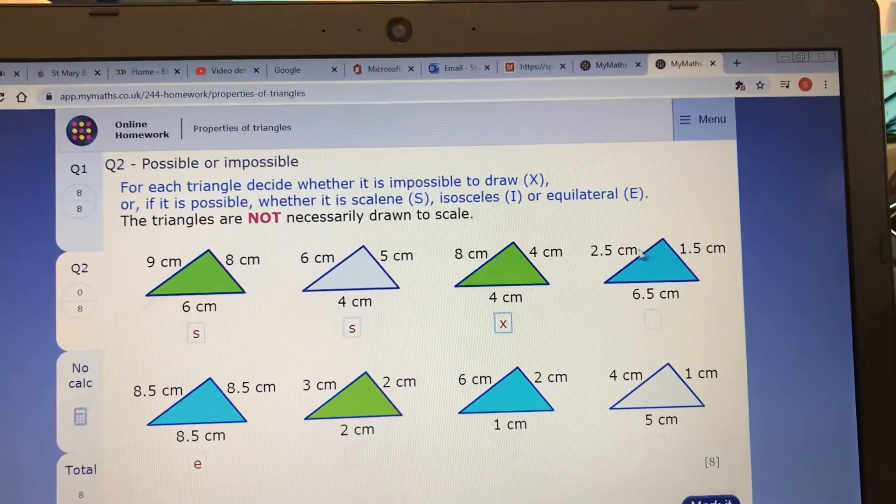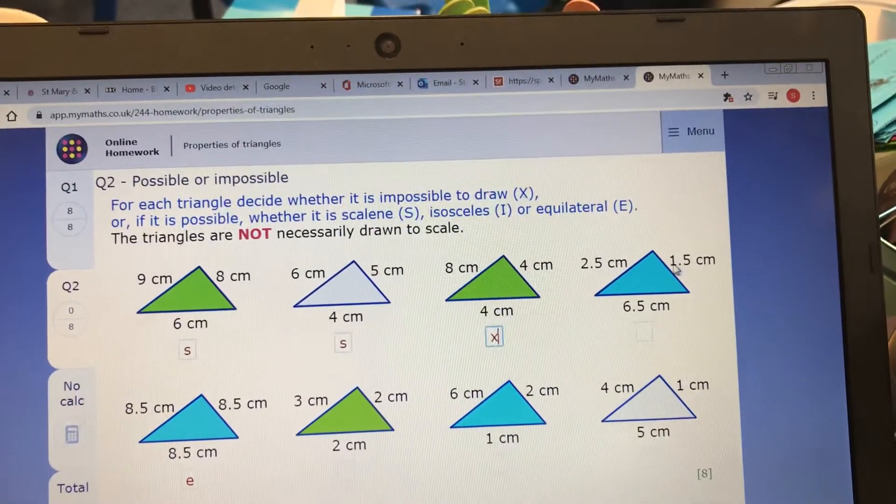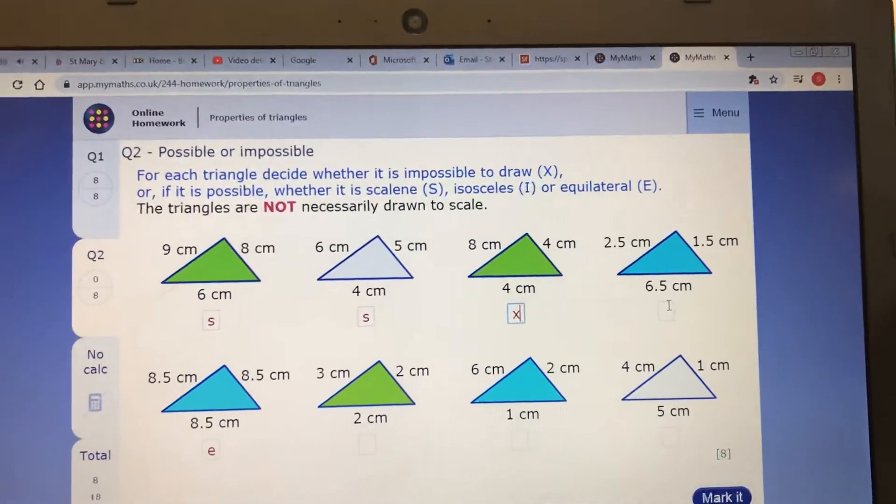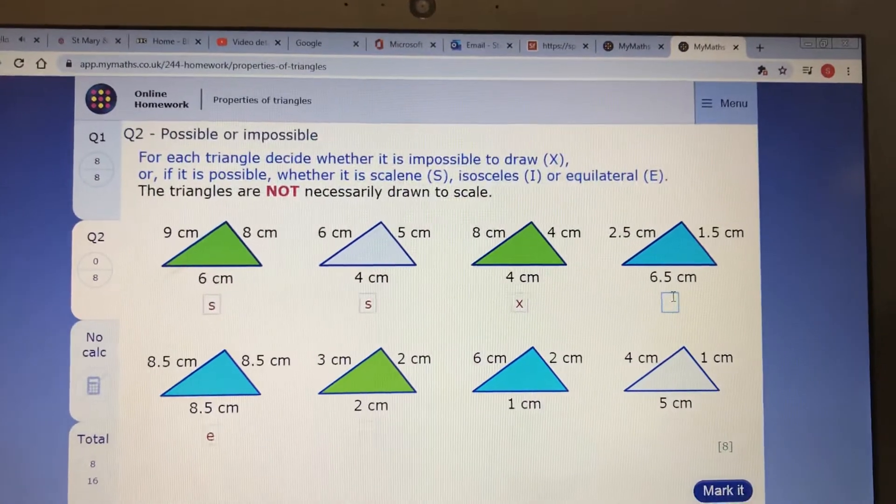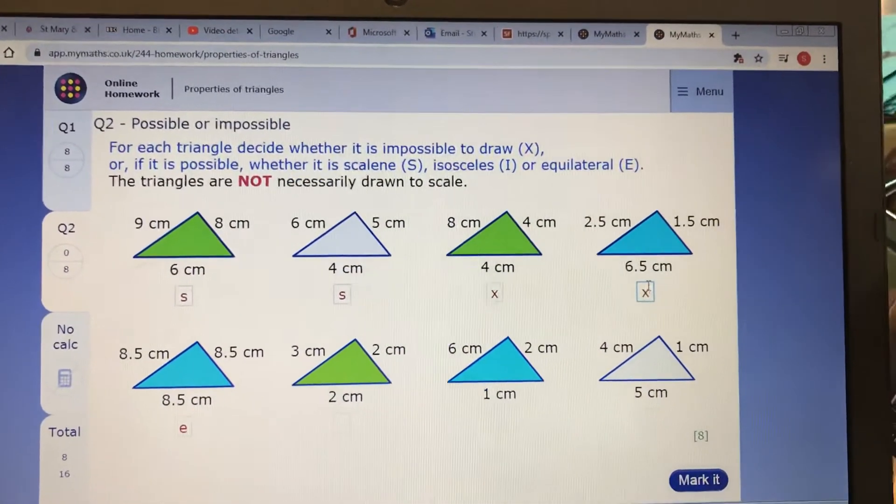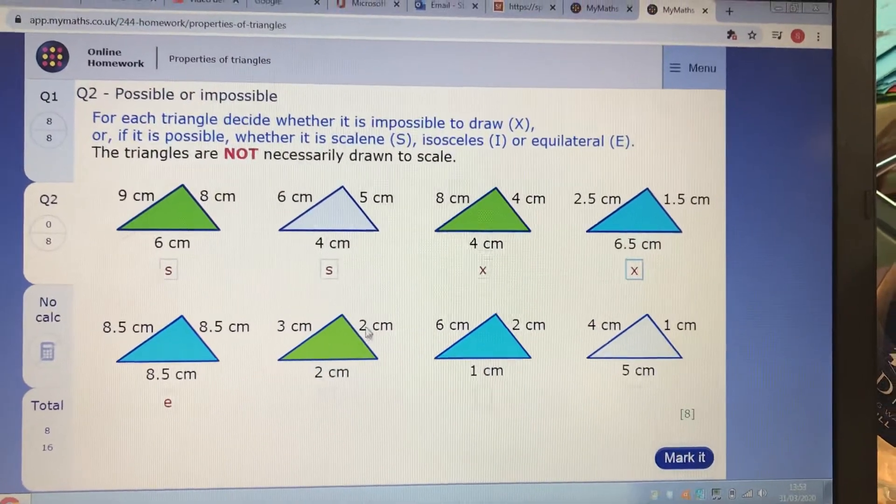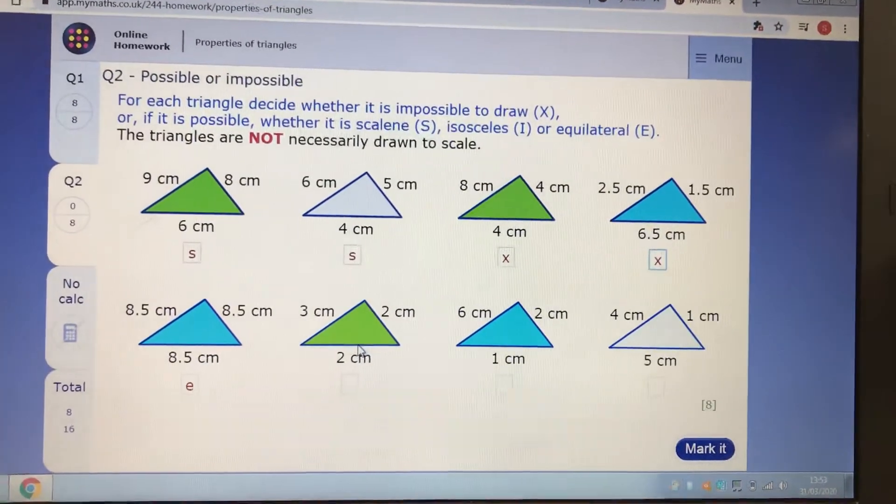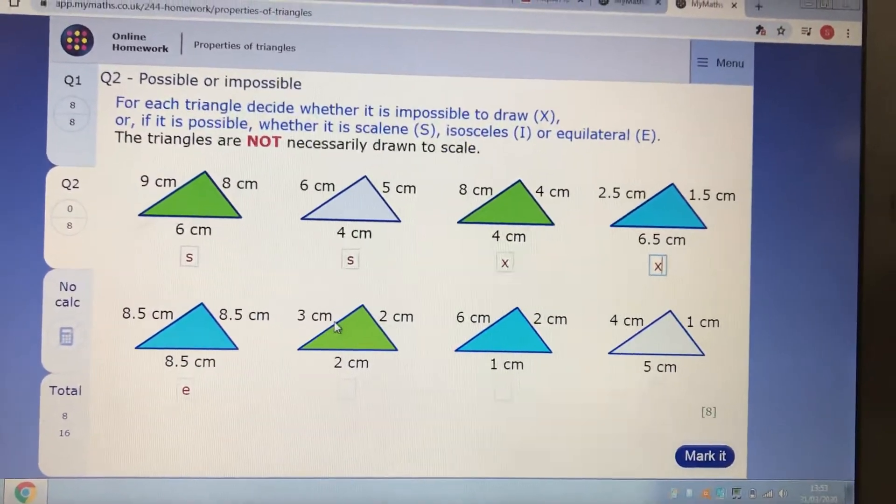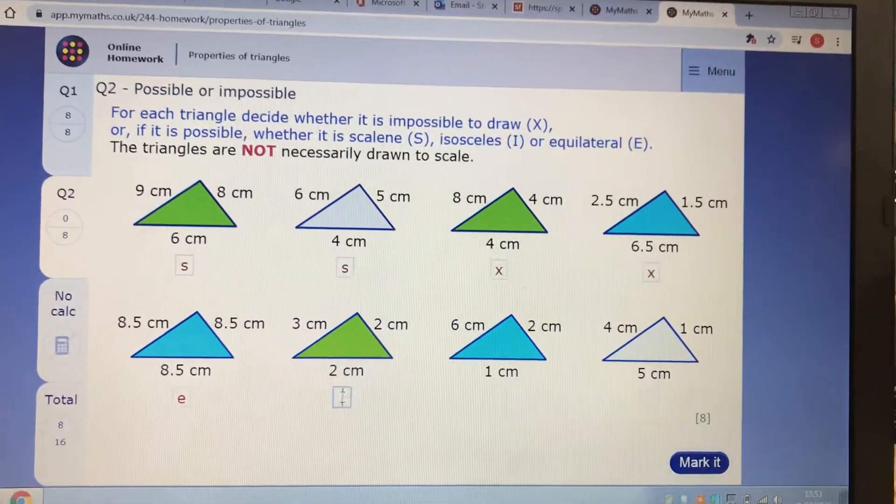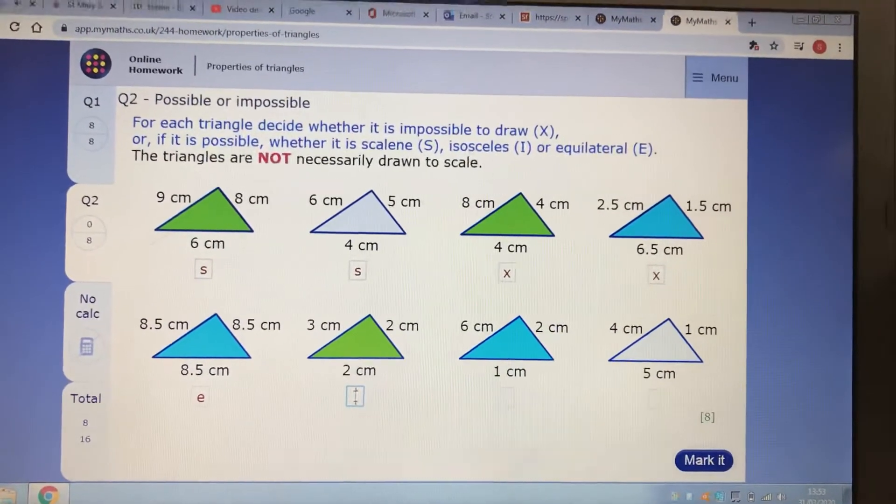Two shortest ones here, 2.5 and 1.5 is four. Doesn't add up, so that's going to be less than 6.5, so therefore it's not possible. Let's come down here. Okay, the two shortest sides are 2 and 2. That makes 4. Is that bigger than the longest side? Yes, it is. So that is possible, and therefore it's got two sides the same, which is an isosceles.